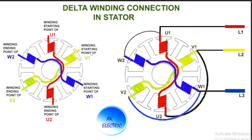For better understanding, I have drawn a stator of the motor. Assume this diagram as the stator. U1 is the starting point — it is wound and brought out as the ending end U2. The starting point of V1 is here and ending point V2 is here; similarly W1 starting point and W2 ending point. The phase difference between each set is 120 degrees. If U1 is at one position, then V1 will be 120 degrees apart, and W1 will be another 120 degrees further.